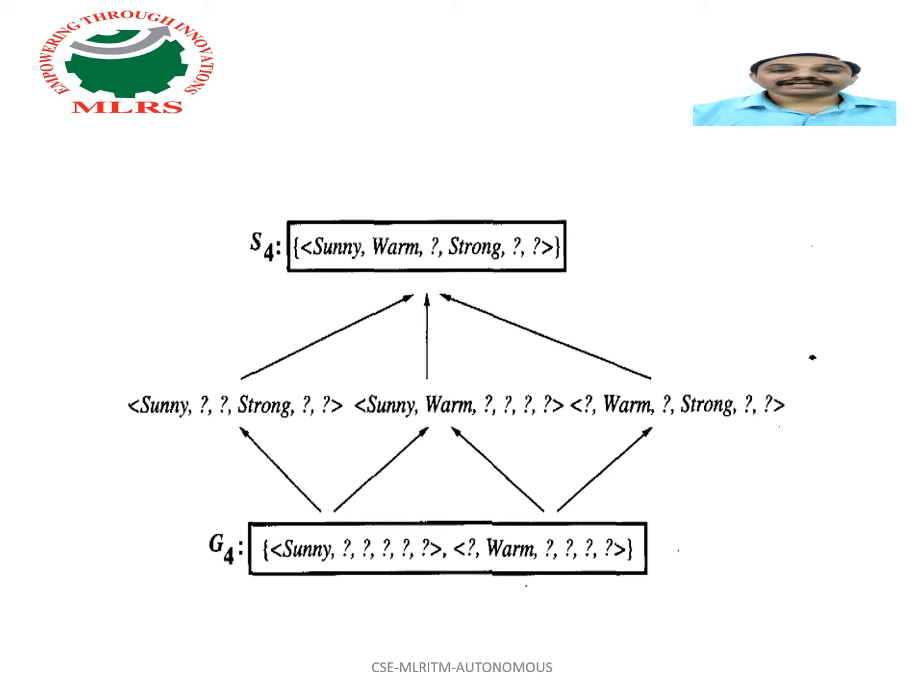This learned version space is independent of the sequence in which training examples are presented. As further training data is encountered, the S and G boundaries will move monotonically closer to each other, delimiting a smaller and smaller version space of candidate hypotheses.